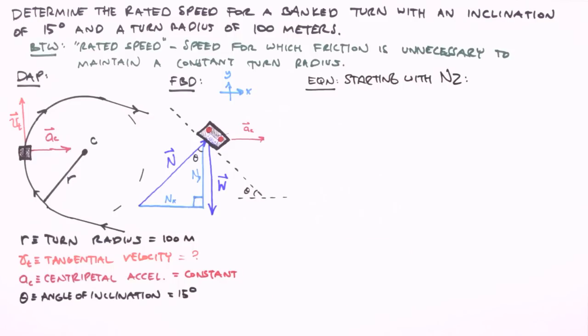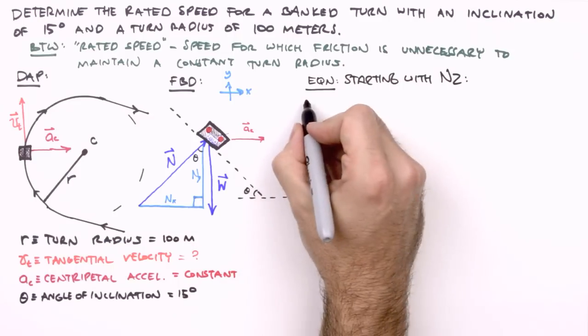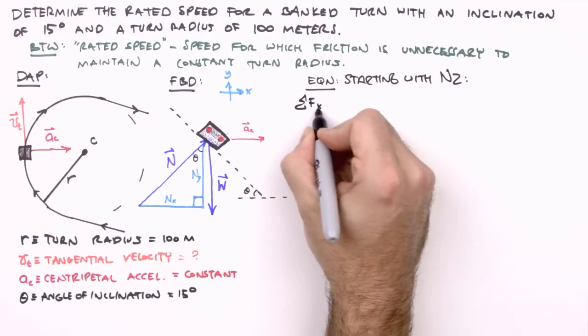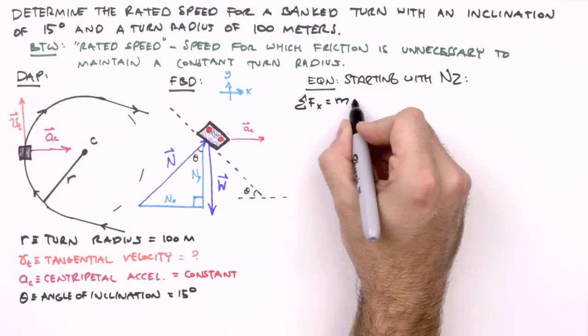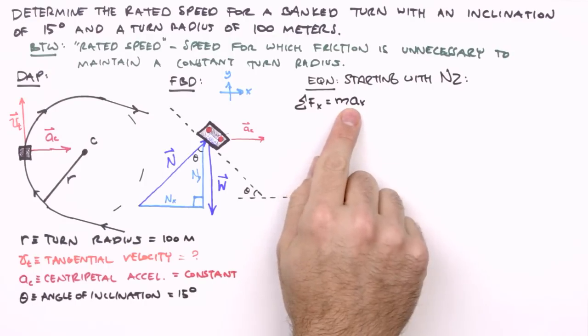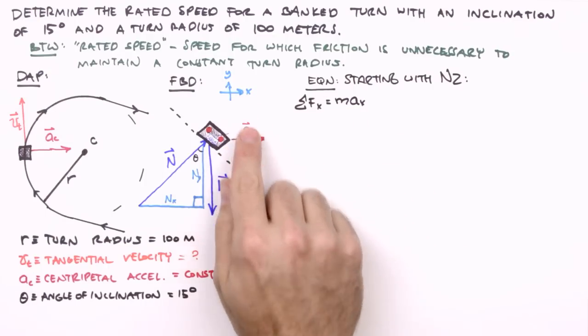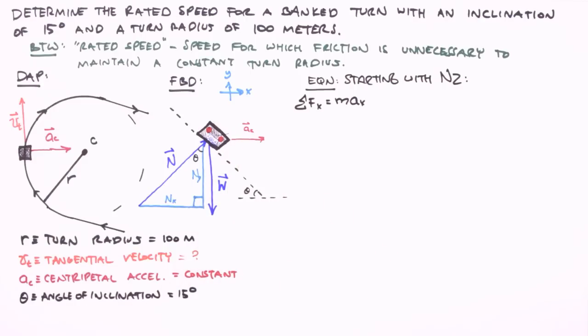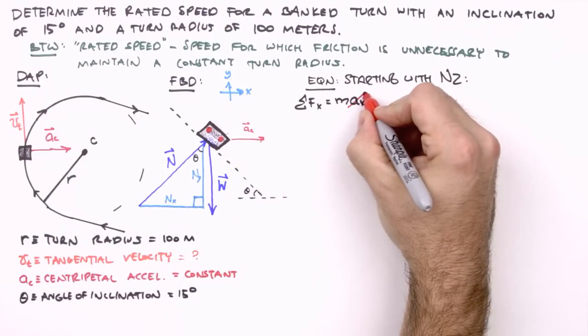So here we'll start with n2 applied to the x-direction. So we have the sum of the forces in the x-direction is equal to the product of its mass and its acceleration in the x-direction. Here, the acceleration in the x-direction is equal to its centripetal acceleration. So we'll set a sub x to a sub c.